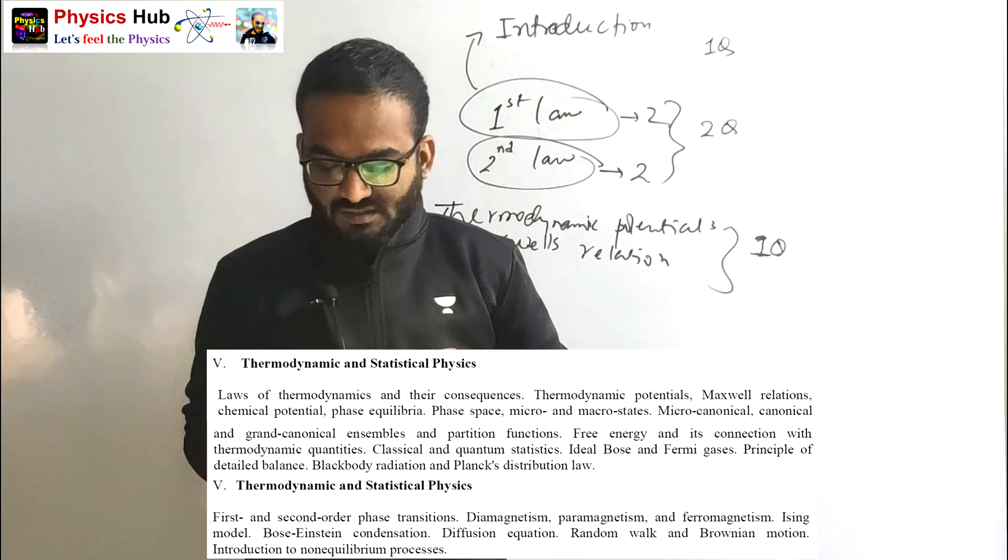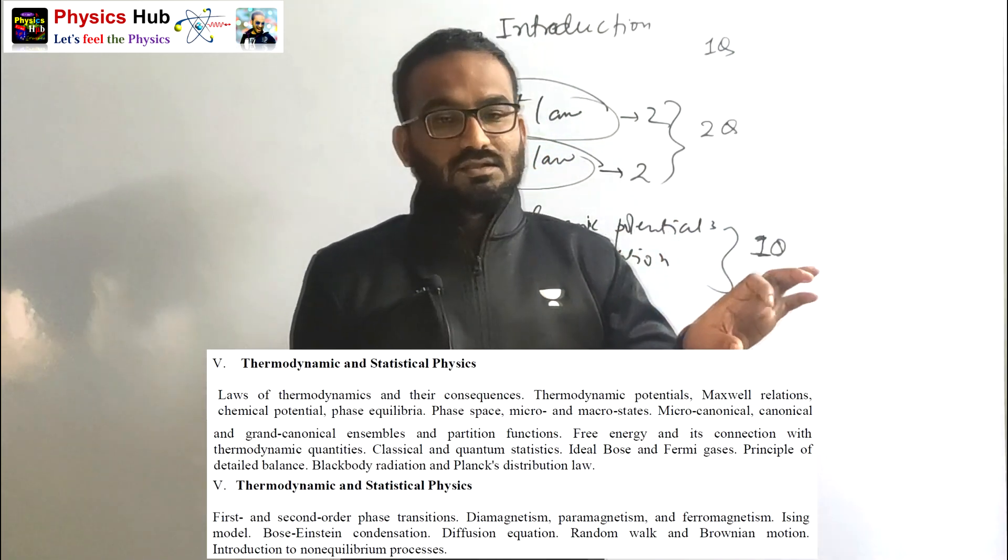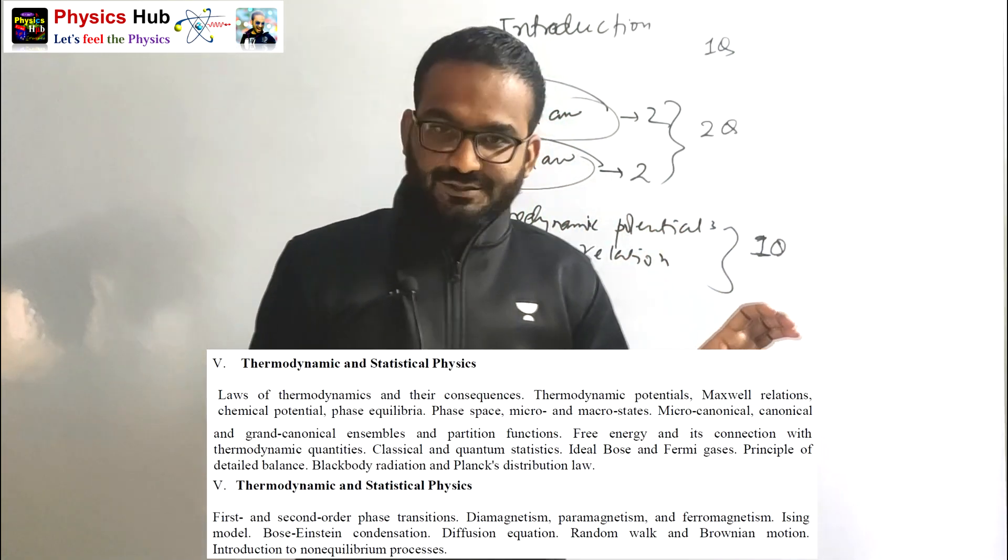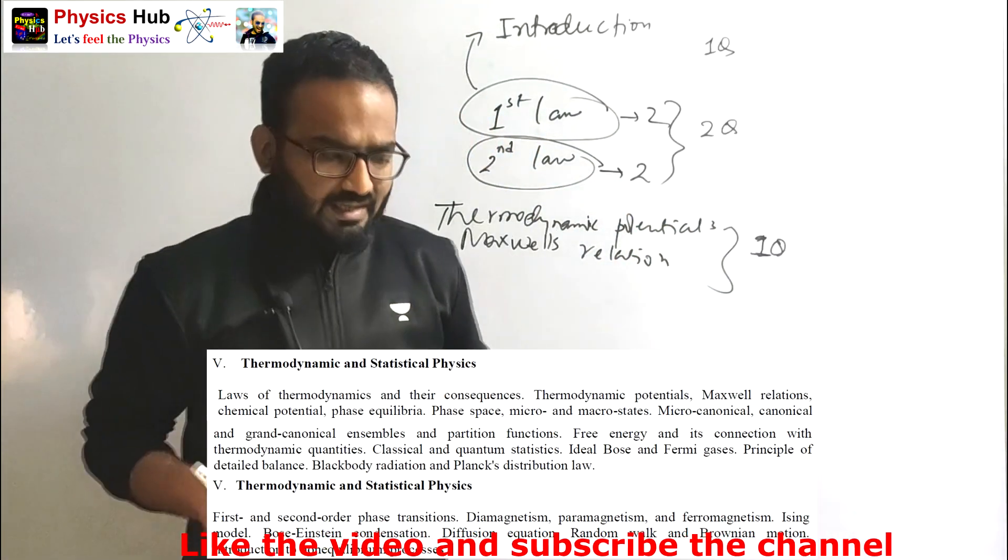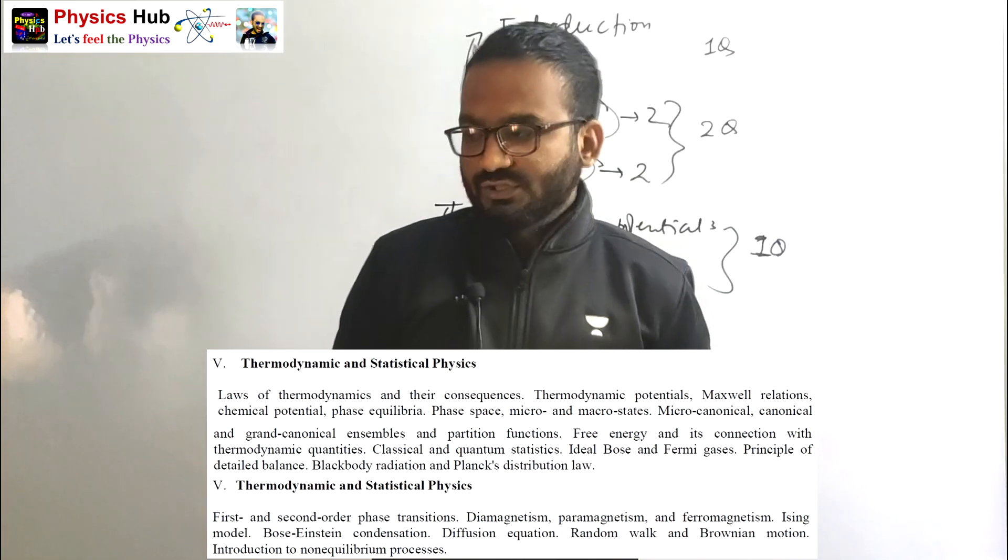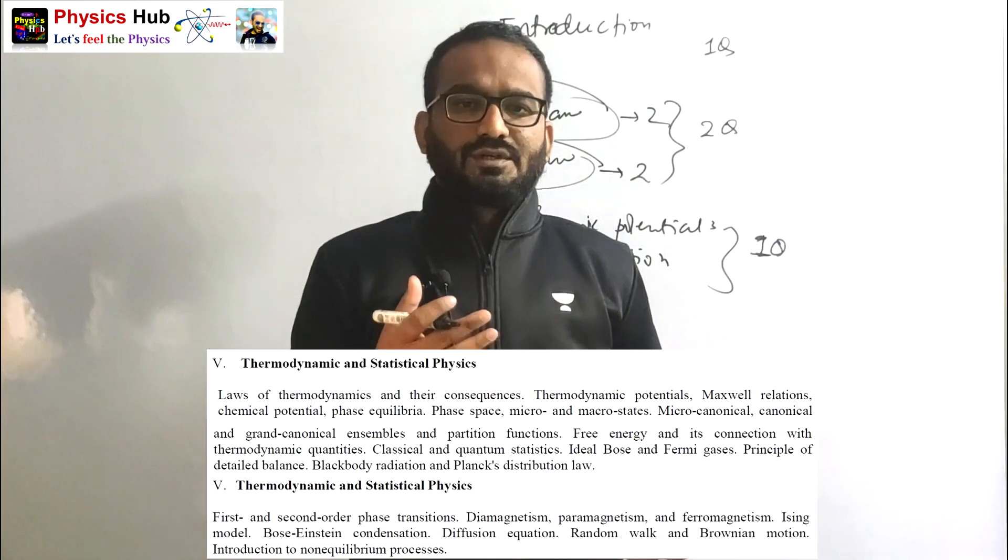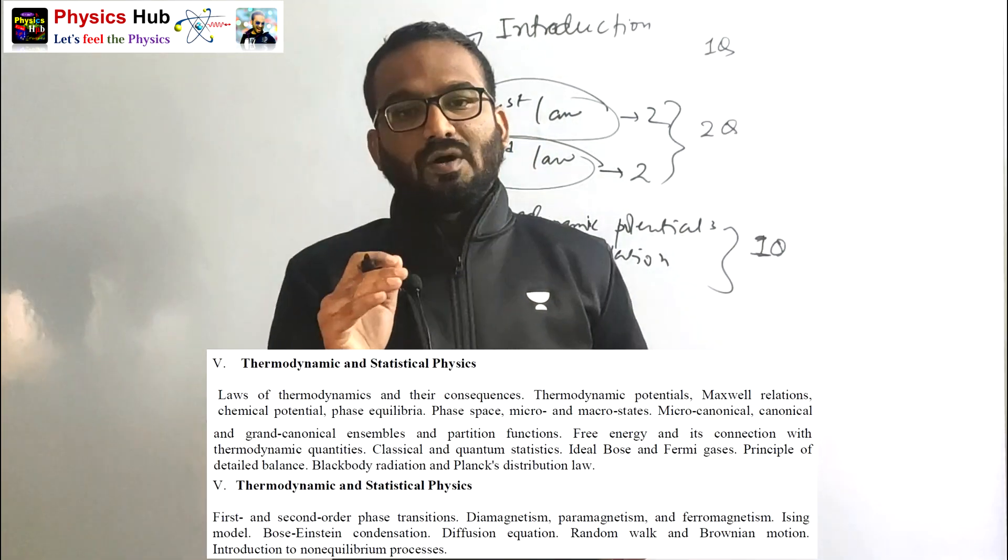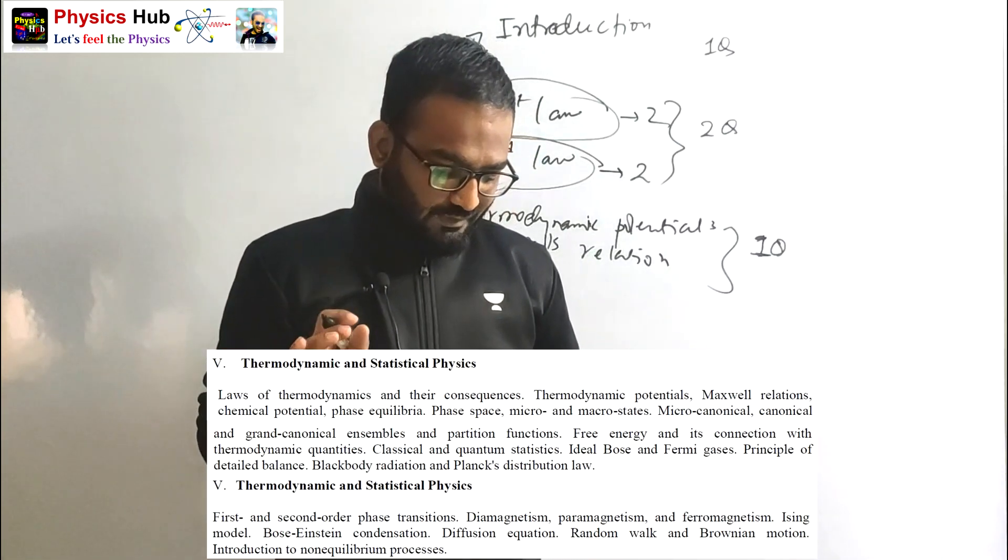Then what's next? Statistics. There are two types: classical statistics (MB statistics) and quantum statistics (Fermi-Dirac and Bose-Einstein statistics). Look, this statistics portion is very easy and questions generally come from this section that are very easy. So we need to have good command on this, and it's not that much stuff.